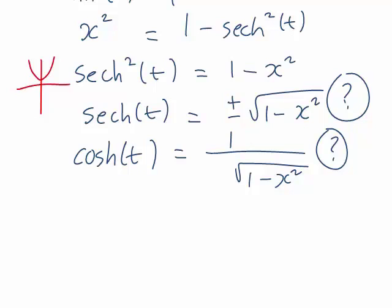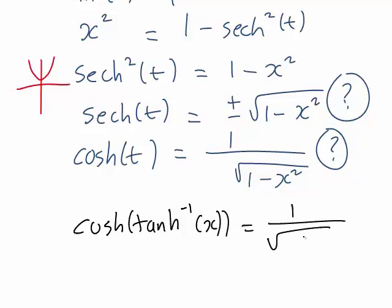Therefore we have found that the original expression we were looking for, which was cosh of inverse tanh of x, is equal to 1 divided by the square root of 1 minus x squared. Or in other words, y equals 1 divided by the square root of 1 minus x squared.